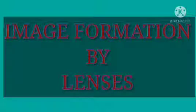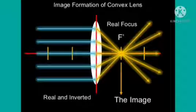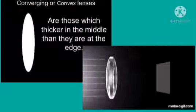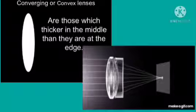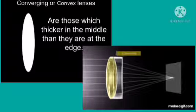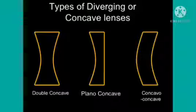Children, we can see different types of images, smaller, bigger, inverted and erect through lenses. A convex lens produces images similar to those produced by a concave mirror and a concave lens forms images which are similar to those produced by a convex mirror.